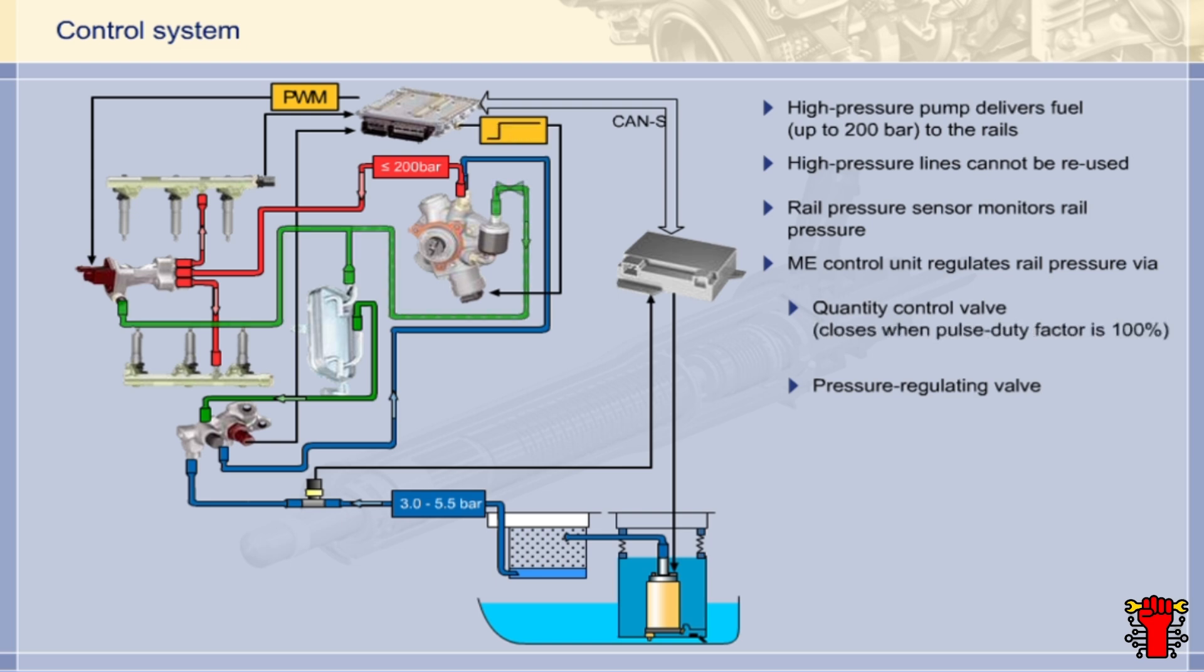The quantity control valve is closed when a continuous current is applied, in other words, when the pulse duty factor is 100%. With the pressure regulating valve, it's exactly the opposite. It closes if no current is applied, in other words, when the pulse duty factor is zero. Which of the two valves plays the main role in regulating the high-fuel pressure depends on the engine's operating status.